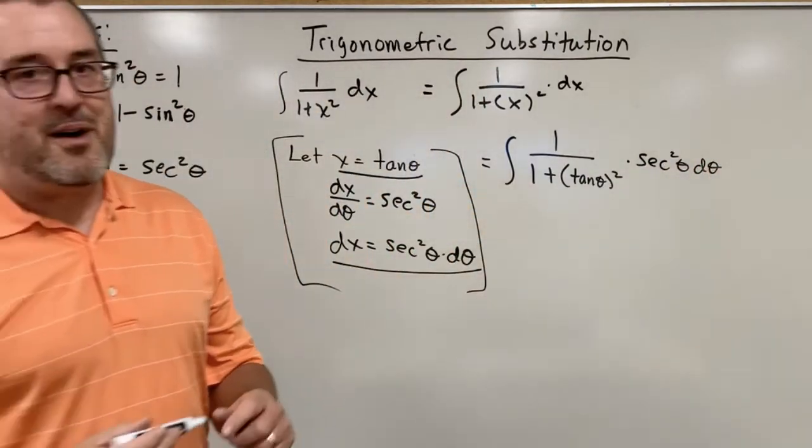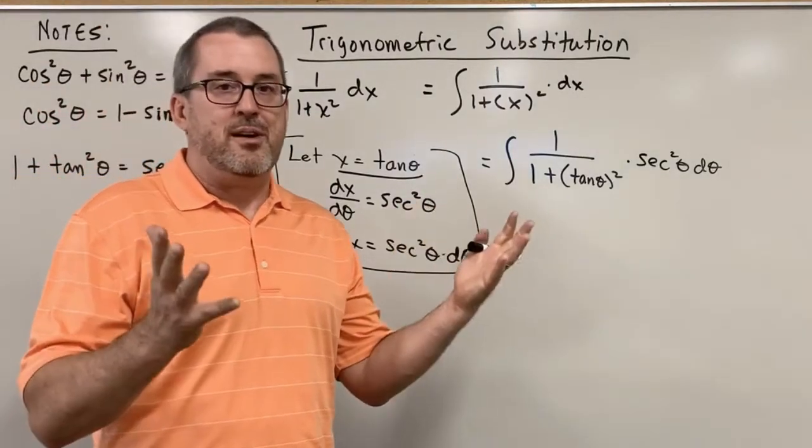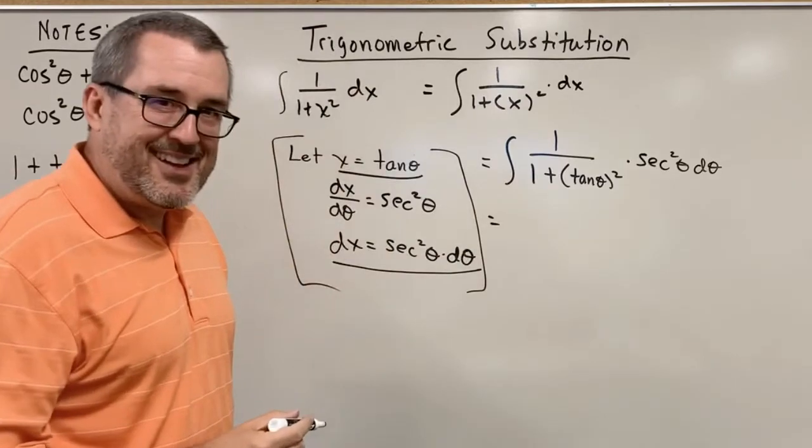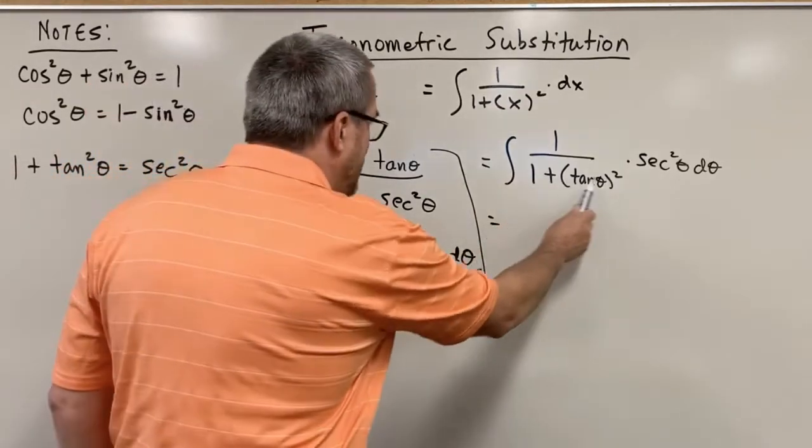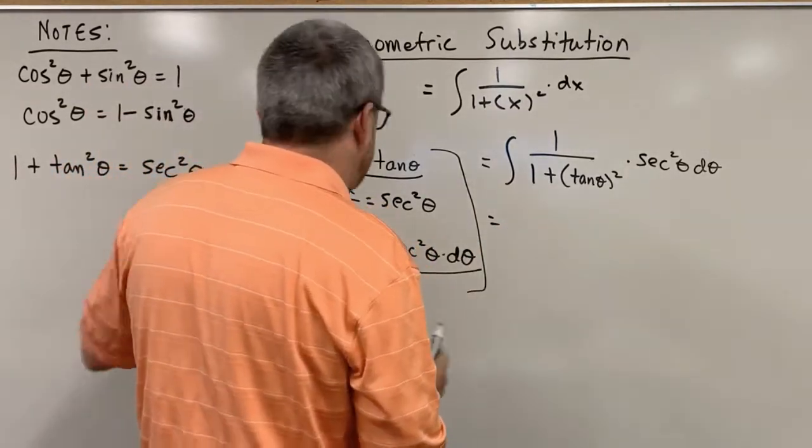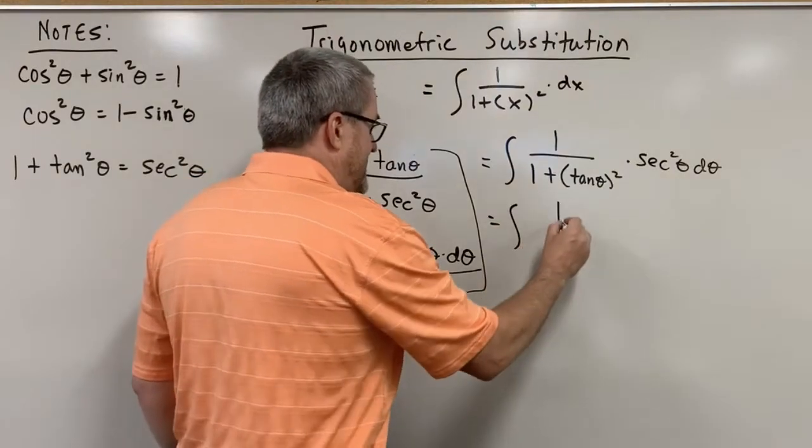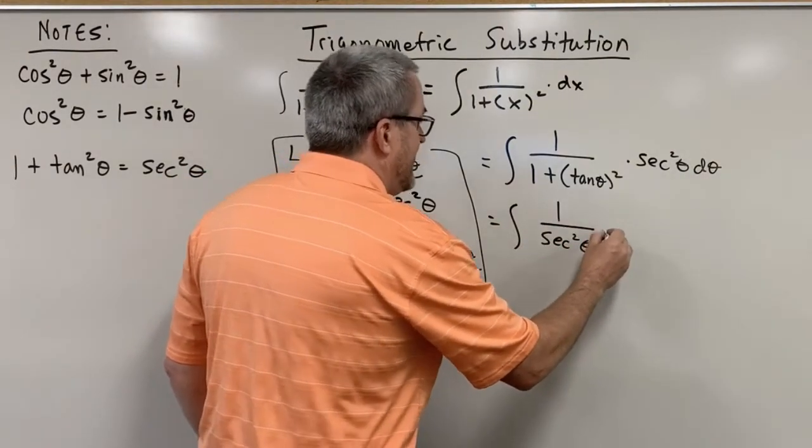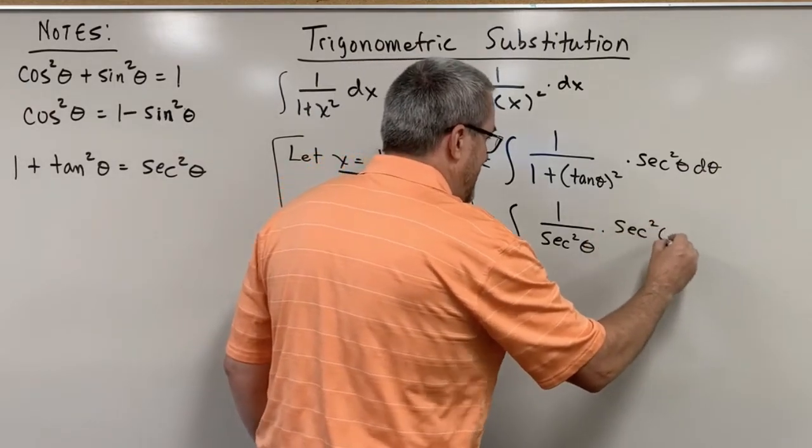Now again, at this moment you might wonder, well how does this help? I hope you can see it. Can you see a couple steps ahead? Can you see why this is helpful? 1 plus tangent squared, we know, is the same as secant squared. So this thing becomes 1 over secant squared times secant squared theta d theta.